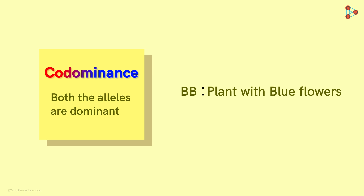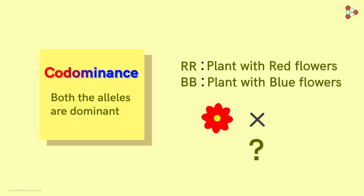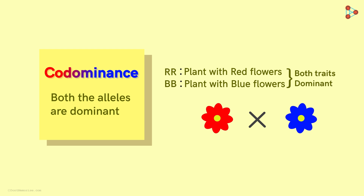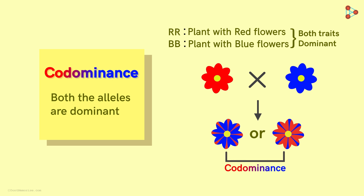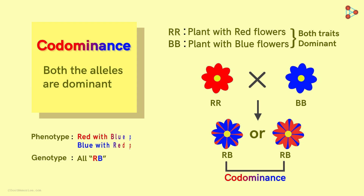The third type is co-dominance. If we assume another dominant allele for red coloured flowers, the genotype of that plant will be RR. When this plant is crossed with the one having blue coloured flowers, both red and blue are dominant traits, so both alleles will be expressed with equal strength. As a result, we obtain a progeny with flowers having both blue and red colours — either blue flowers with red patches or red flowers with blue patches. Theoretically, crossing RR and BB yields F1 hybrids with genotype RB.